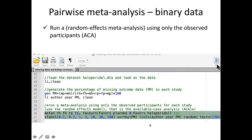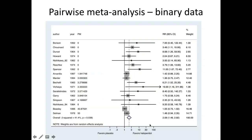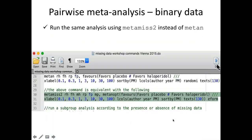Here we use the metan command to run a simple meta-analysis of this data. The forest plot shows an odds ratio of 2.09 with a confidence interval of 1.49 to 2.92. This is the standard random effects meta-analysis.